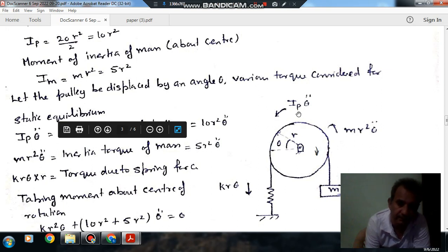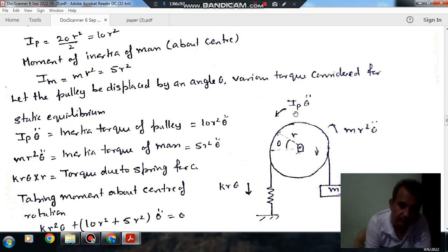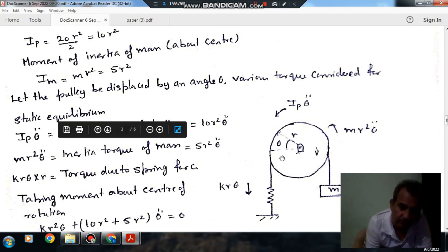So to bring back the pulley or to convert the dynamic problem into static problem, we have to apply inertia torque. Inertia torque is IP theta double dot. Theta double dot is acceleration of pulley and IP is mass moment of inertia of pulley. And MR square is your moment of inertia of this mass about the center, and theta double dot is acceleration.